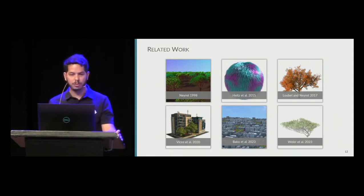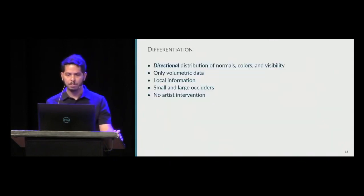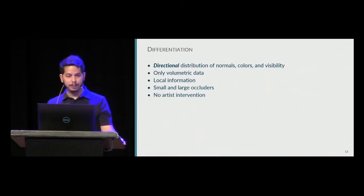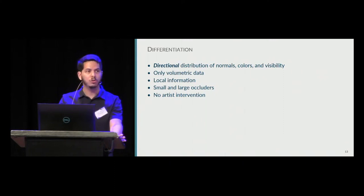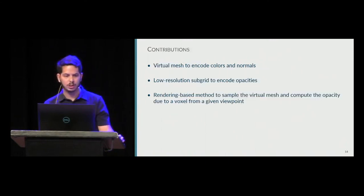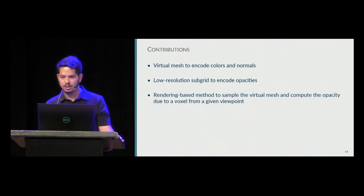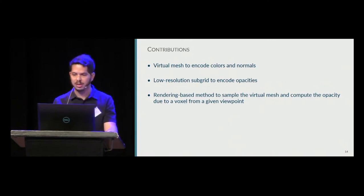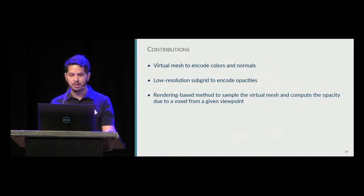Building on previous work, we want to pay particular attention to the directional distribution of normals, colors, and visibility. We use only local volumetric data for the representation and only volumetric information. We want to handle both large and small occluders without any artist intervention. To achieve these goals, we propose a virtual mesh that encodes colors and normals in its faces and vertices to approximate the appearance of the voxel. We also propose a low-resolution subgrid to encode opacities to approximate both surface-like and volumetric appearance, and we rely on simple but efficient random methods to sample the virtual mesh and compute the opacity from a given viewpoint.